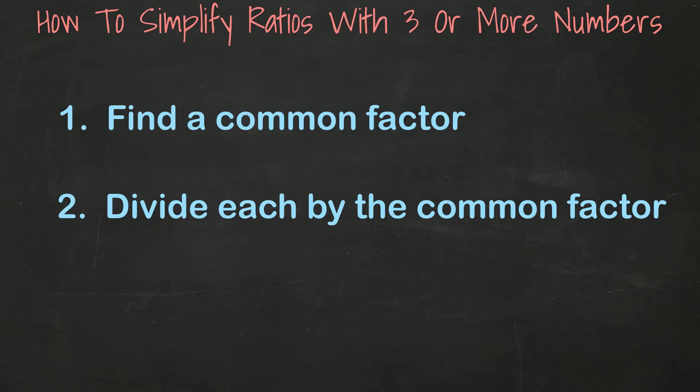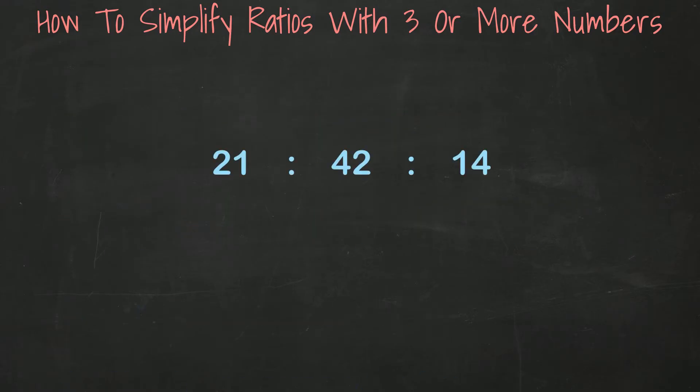Let's look at a few examples here. First example, simplify the ratio 21 to 42 to 14. Let's look at these numbers together. Do you recognize any whole number that can be divided evenly into all three of these numbers?